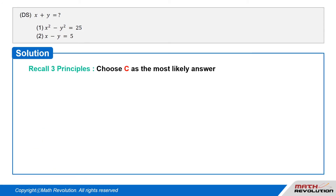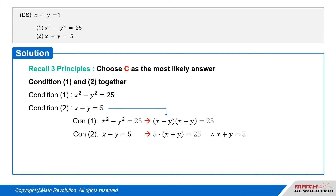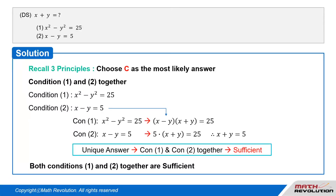Recall three principles and choose C as the most likely answer. Let's take a look at both conditions together. Condition 1 tells us that x squared minus y squared equals 25. Condition 2 tells us that x minus y equals 5. We can factor the first equation using a difference of squares to get x minus y, times the whole of x plus y, equals 25. If we substitute 5 for x minus y in this equation, we get 5 times the whole of x plus y equals 25. Dividing both sides by 5 gives us x plus y equals 5. The answer is unique, so the conditions combined are sufficient.